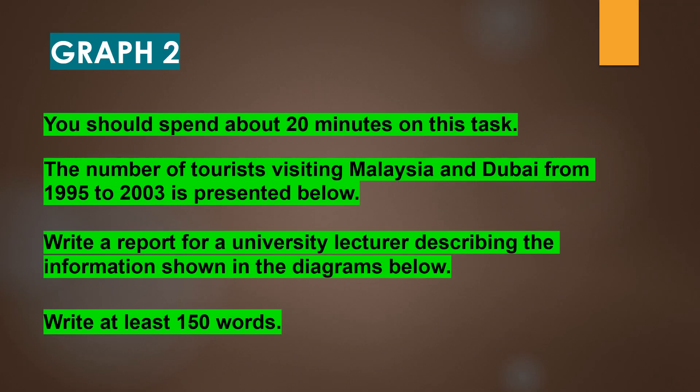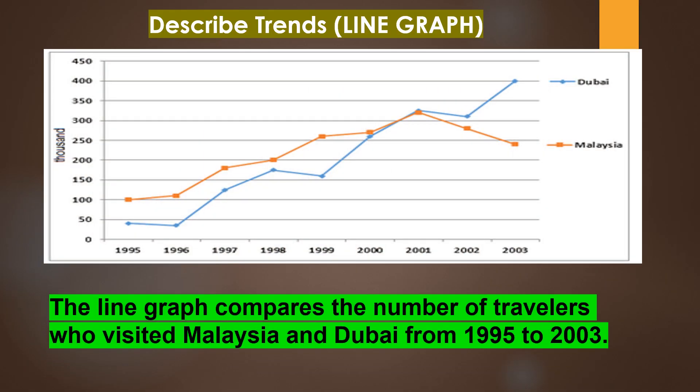Let's move to graph 2. You should spend about 20 minutes on this task. The number of tourists visiting Malaysia and Dubai from 1995 to 2003 is presented below. Write a report for a university lecturer describing the information shown in the diagrams. Write at least 150 words. Let's take a look at the line graph. The line graph compares the number of travelers who visited Malaysia and Dubai from 1995 to 2003.